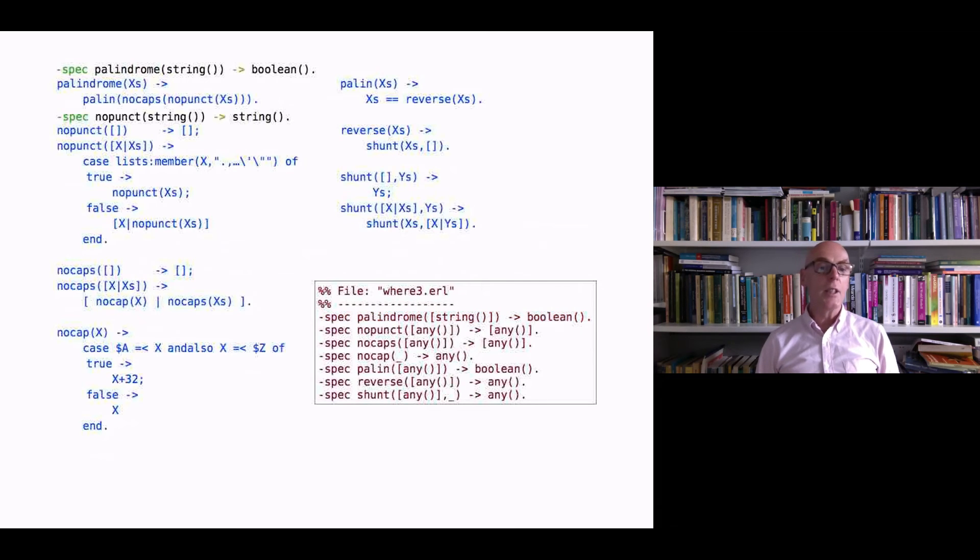In a similar way, we can say that no_punct takes strings to strings. What Typer derived is it takes a list of any to a list of any. We're giving it a tighter type there. We're saying we know if we give it a string then it will return a string back to us. And again Typer is happy to accept that.